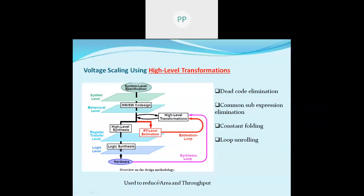High-level transformations are done to reduce area requirements and increase throughput. They include dead code elimination, common sub-expression elimination, constant folding, and loop unrolling. The main objective here is to show how high-level transformation — specifically loop unrolling — can be useful for supply voltage scaling and ultimately minimizing power dissipation.